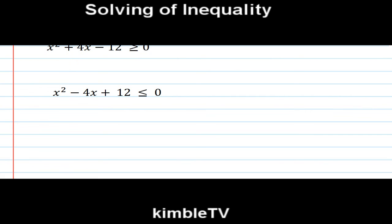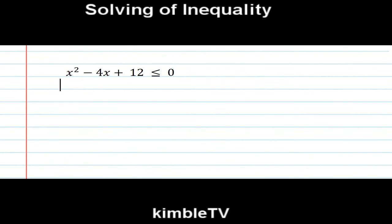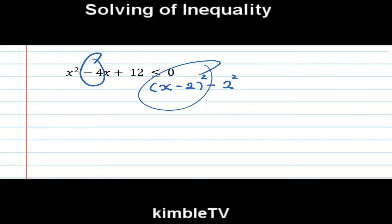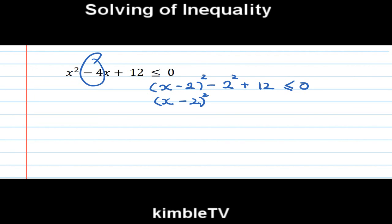For this next question, I will complete the square first. X minus — 4 divided by 2 equals 2 — close bracket, squared, minus subtract 4, and positive 12. This gives X minus 2 squared plus 8, less than 0.